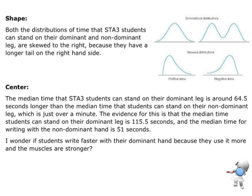So that leads us to this write up here. Both the distributions that they can stand on dominant and non-dominant leg are skewed to the right because they've got a longer tail on that right. Center: they can stand on their dominant leg. The median time they can do that for is 64.5 seconds longer. I'm comparing the difference. Then the median time they can stand on their non-dominant leg. And the evidence is there's my median of 115 and my median of 51.